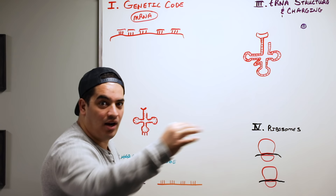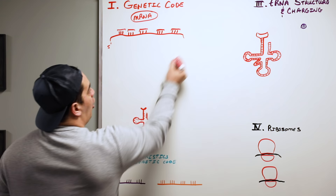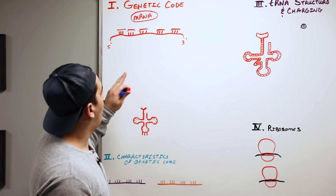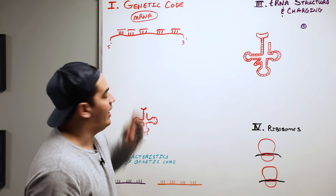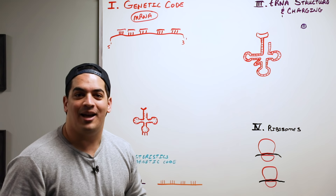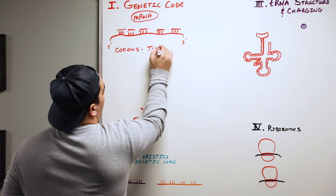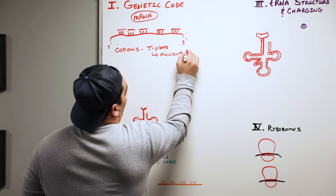On the other end you have the three prime end, and we added the poly-A tail there during post-transcriptional modification. So on the mRNA you have a five prime end, a three prime end, and sequences of nucleotides within it. These sequences of nucleotides in triplet forms along the mRNA are given a very special name — they are called codons. These are triplets of nucleotides.